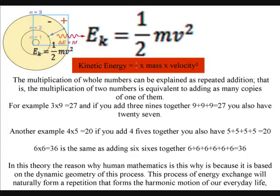The multiplication of whole numbers can be explained as a repeated addition. That is, the multiplying of two numbers is equivalent to adding as many copies of one of them. For example, 3 times 9 equals 27, and if you add three 9's together, it also equals 27.